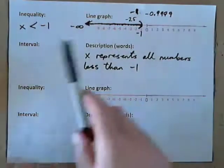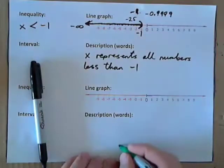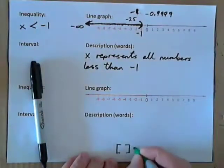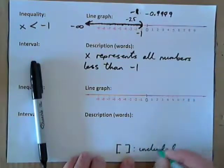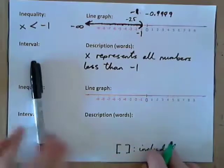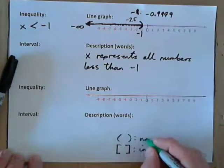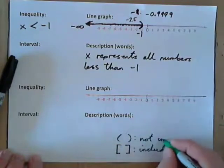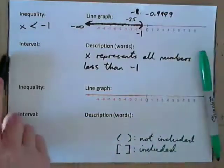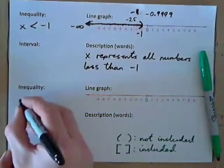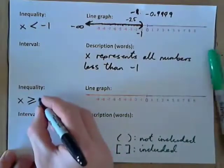Let's make a note: square brackets mean included, whereas parentheses mean not included. So, let's have a look at this one: x is greater than or equal to 0.